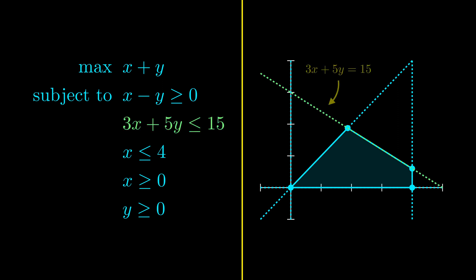These dashed lines represent the points where the constraints are satisfied at equality. For example, this is the line 3x plus 5y equals 15, which is where the second constraint is satisfied at equality.